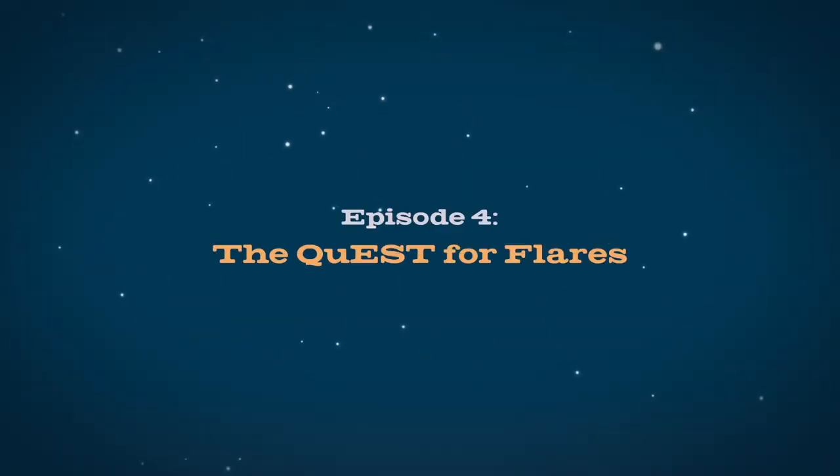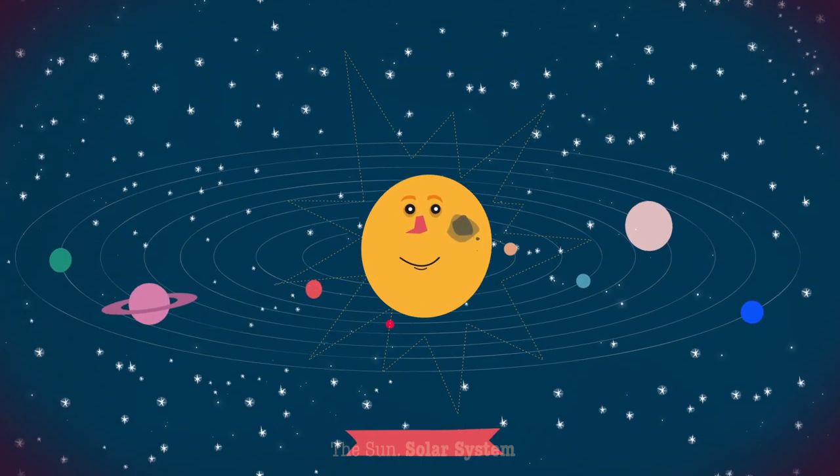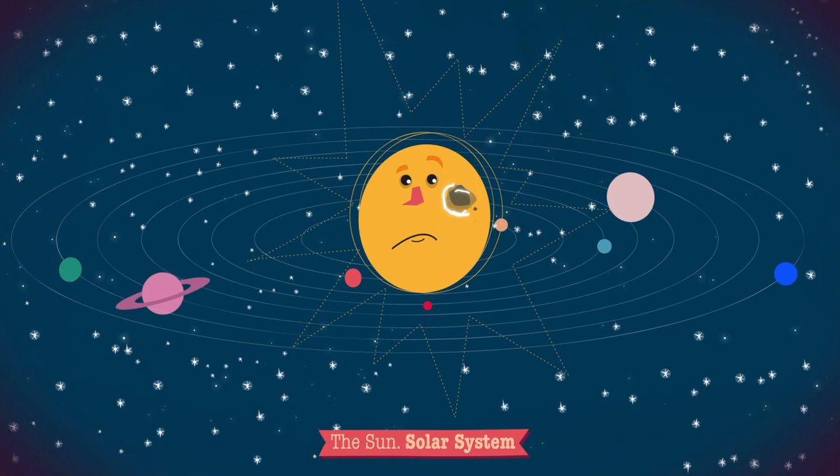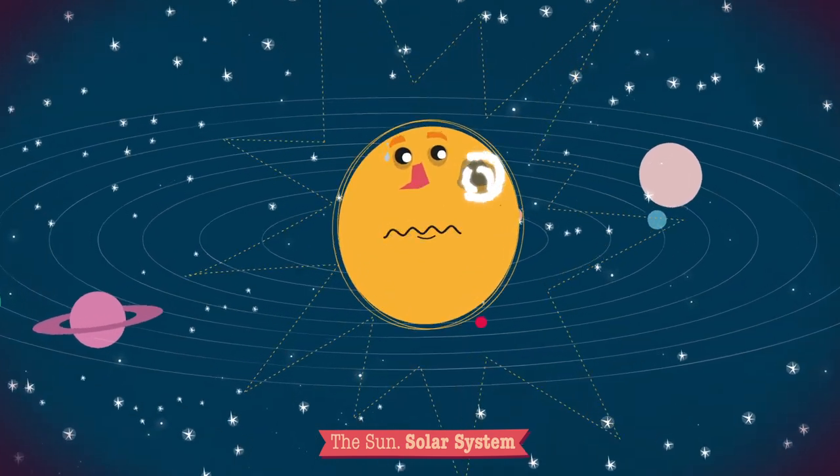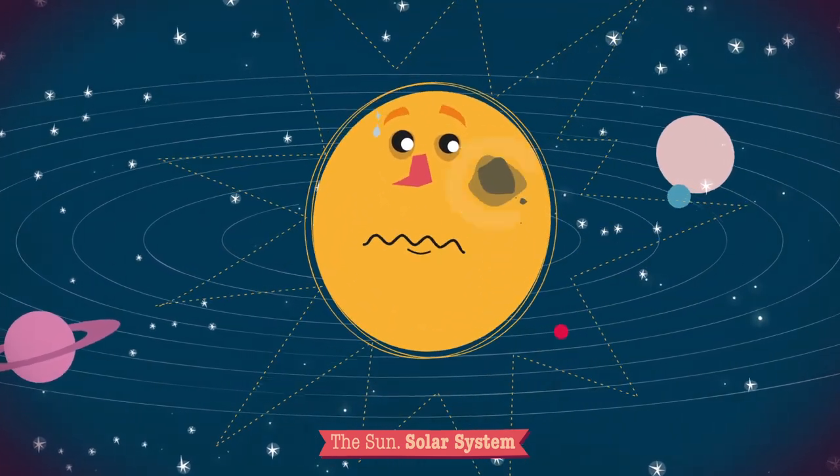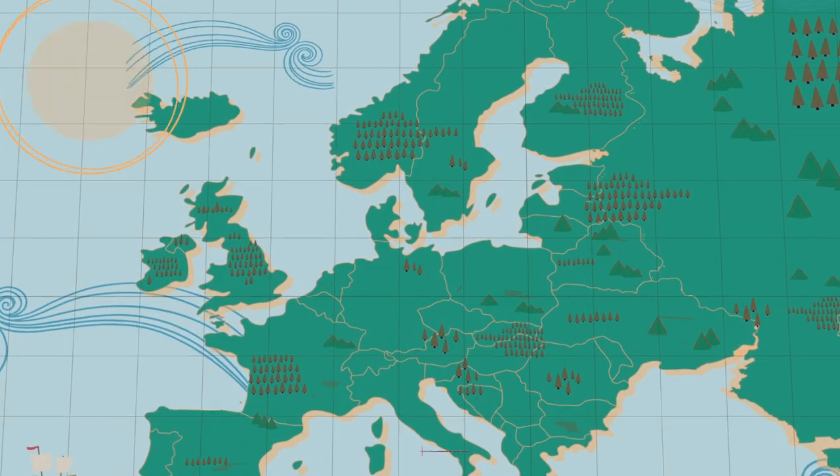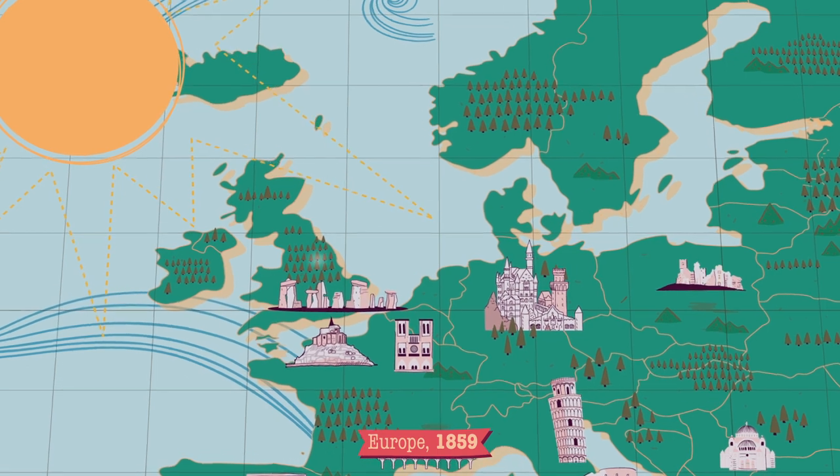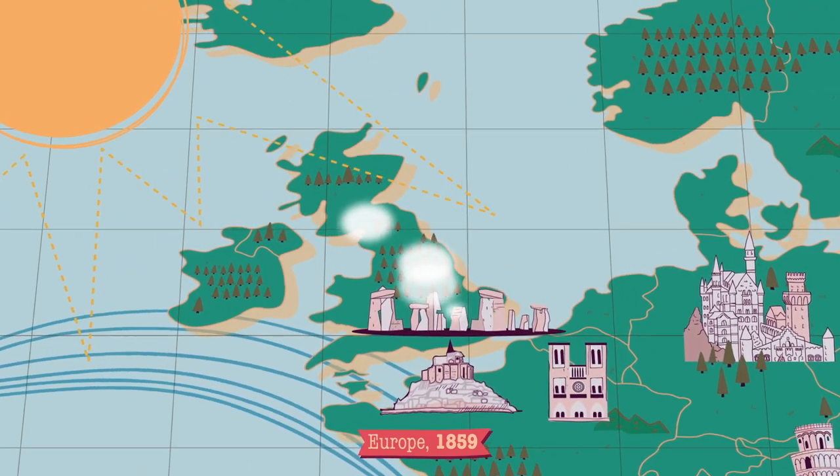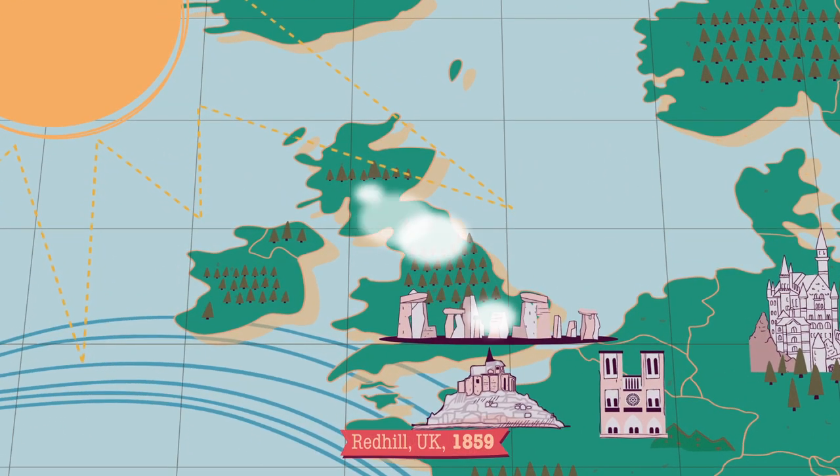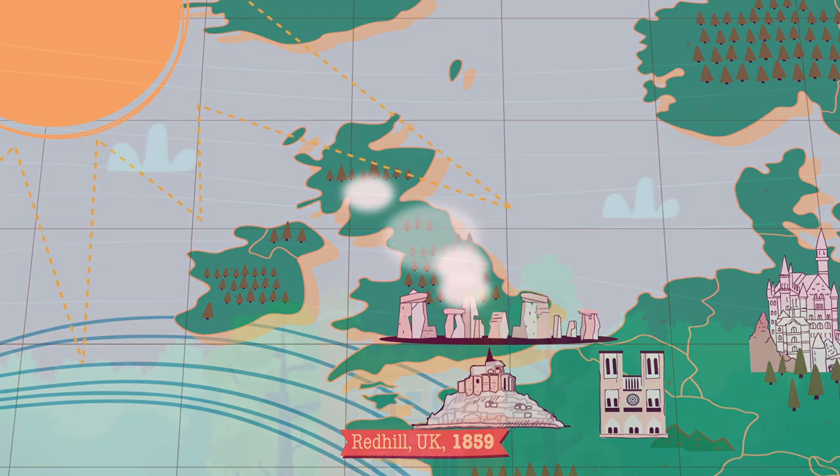Folge 4: Sonneneruptionen auf der Spur. Auf der Sonne kommt es oft zu Eruptionen, explosionsartigen Ereignissen in der Sonnenatmosphäre. Sie wurden im 19. Jahrhundert in England entdeckt. In der Tat wurde die erste Sonneneruption 1859 von Richard Carrington am Red Hill Observatorium südlich von London beobachtet.